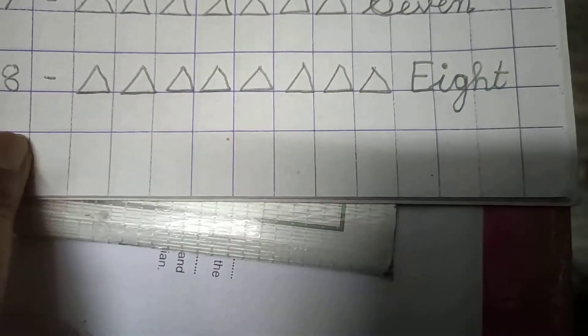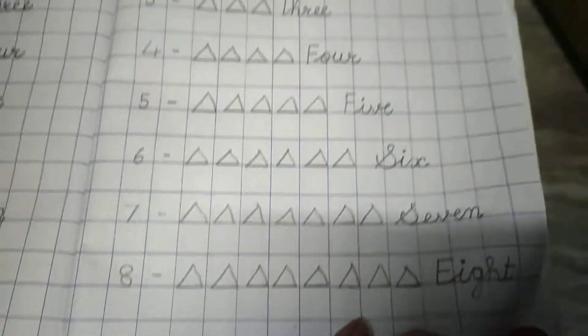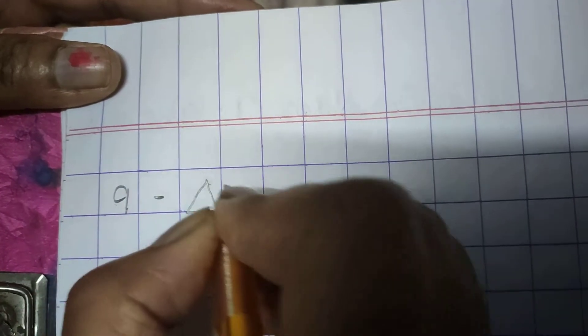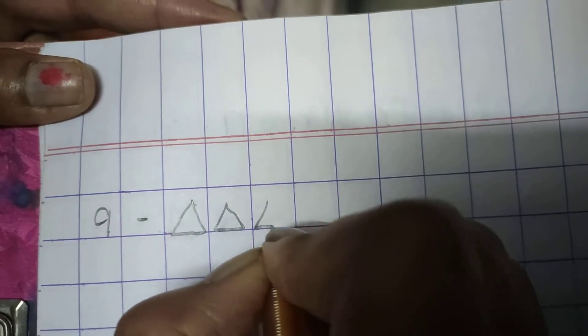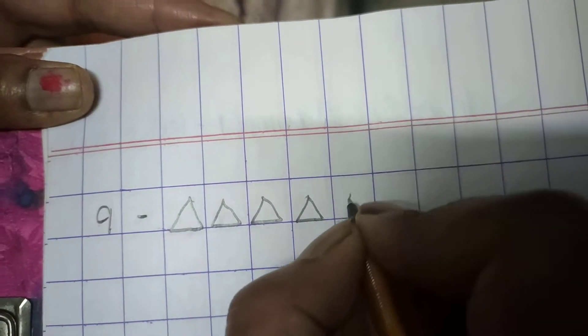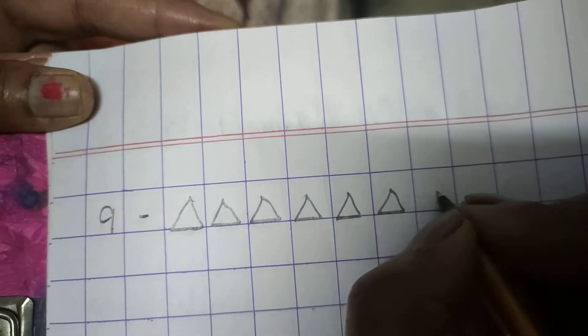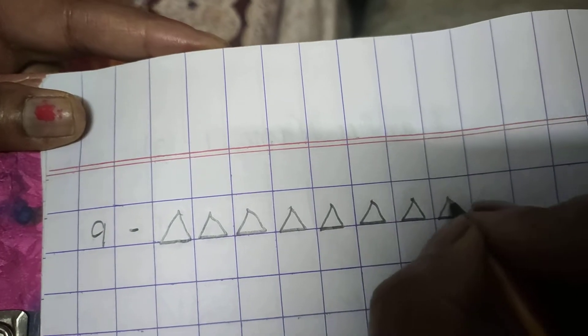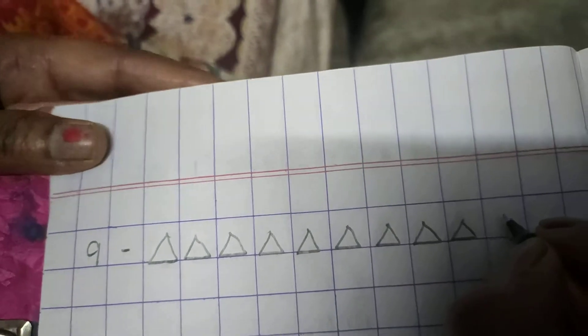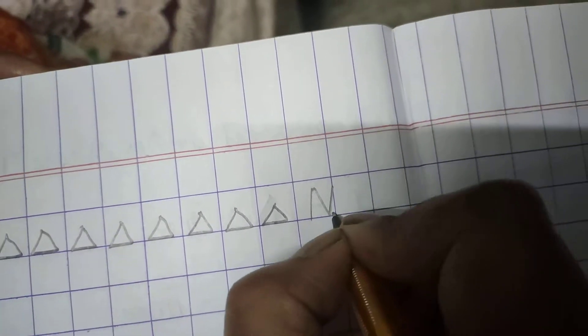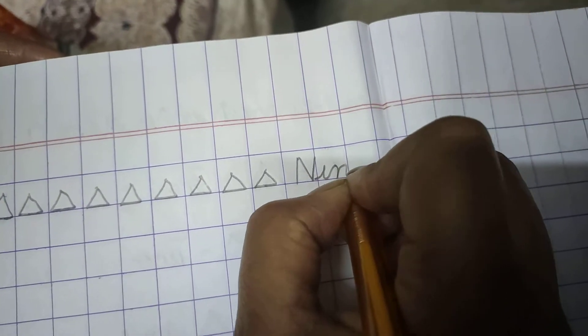8. Now I have no space, so we will carry on next page. 9. Now you will draw 9 triangles. 1, 2, 3, 4, 5, 6, 7, 8, and 9. And write down 9 in number name: N-I-N-E, 9.